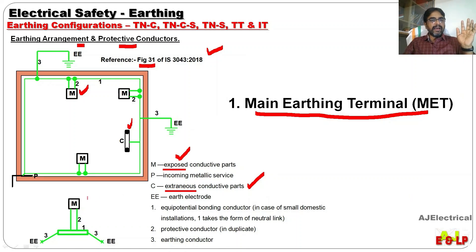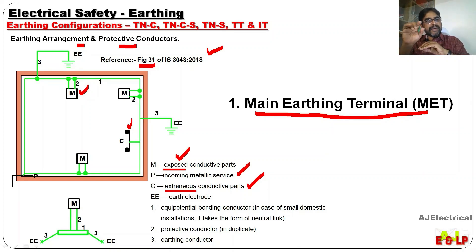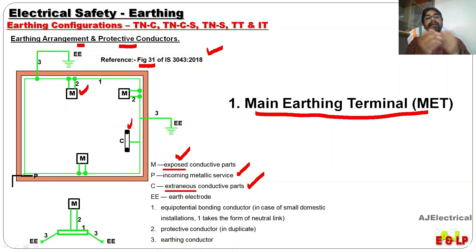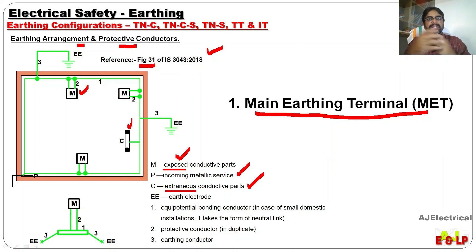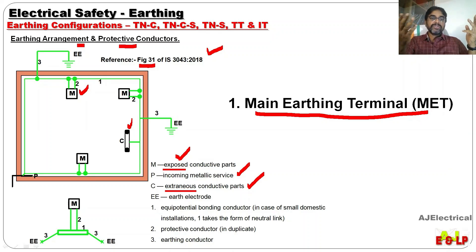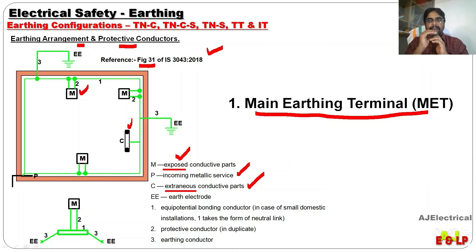If such a metal piece is near our wiring, it is better to connect it into the earthing system, as shown here. Then P is the incoming metallic service — for example, a gas service pipe — and that metal pipe also should be connected to this system. So we are doing the process of equipotential bonding, interconnecting the earthing conductors and protective conductors using the Main Earthing Terminal. MET is just like a bus — it is a common point interconnecting all the earth components. That is the duty of the Main Earthing Terminal.